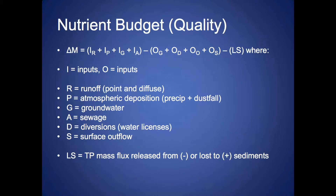Here's what that figure showing all the nutrient inputs basically looks like. It's a very simple equation, even though it might look a little complex. You've got your inputs on one side, subtract out your outputs, and then you've got your lake sediment loading. Inputs include runoff — point and diffuse — from streams and overland runoff, atmospheric deposition, which is precipitation and dustfall, groundwater, and sewage. Outgoing includes diversions, surface outflow, and groundwater out. And finally, the lake sediment, which is either going into or being released from the sediments.